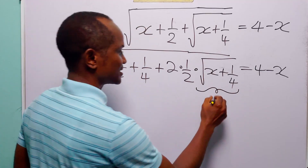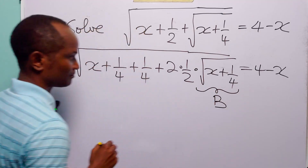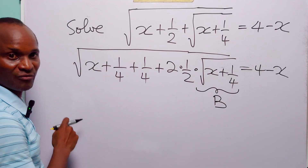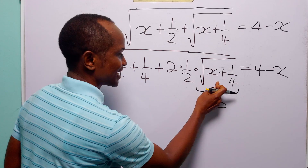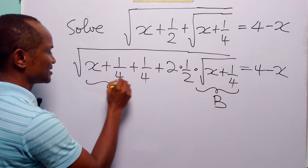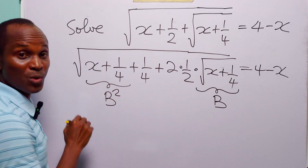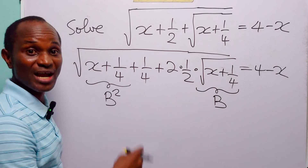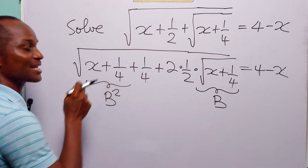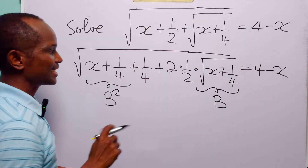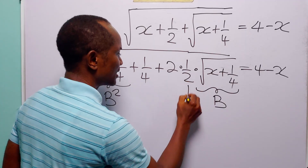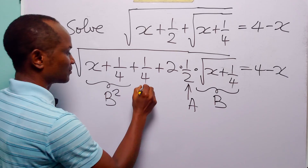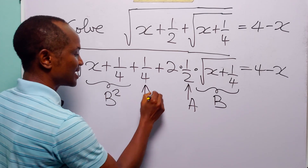Now let us look at this. Here we have the square root of x plus 1/4 — let us call it b. Now come over to this side: we have x plus 1/4. Notice that if the square root of x plus 1/4 is equal to b, then x plus 1/4 is going to be b squared, because when you square the square root of x plus 1/4 you get x plus 1/4.